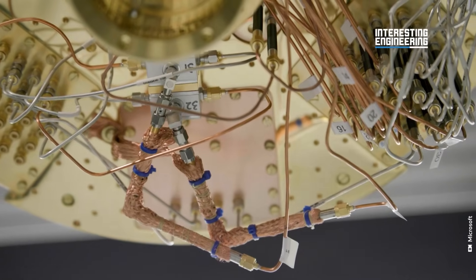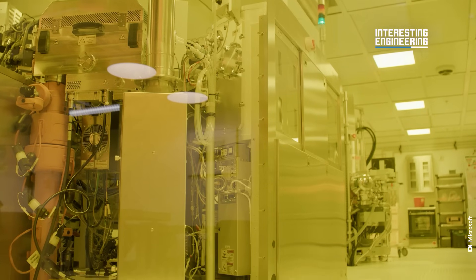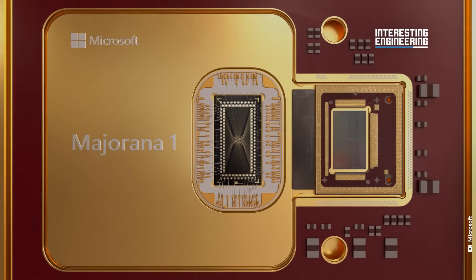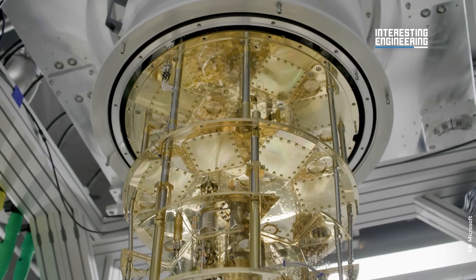Microsoft's breakthrough doesn't just stop with a single chip. The architecture is designed to be scalable. Aluminum wires forming the letter H hold four Majorana particles, creating a single qubit. By connecting multiple H-shaped structures, Microsoft aims to build an operational large-scale quantum computer.